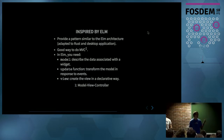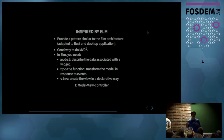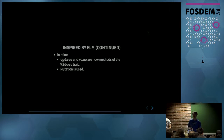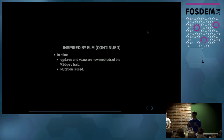In Relm, you declare a model, which is the data you associate with a view. You have an update function that takes the model in response to some event and returns the new model. And you have a view function that describes your view in a declarative way. I adapted this to Rust — for instance, update and view are now methods of a widget trait, and we use mutation when it's convenient. The update method will take a mutable reference so we can mutate the model instead of returning a new one.